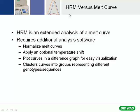HRM is an extended analysis of the melt curve — it takes it one step further. It requires additional analysis software that allows the normalization of the melt curves, applies an optional temperature shift as required, and plots the curves in a difference graph for easy visualization. You can then quickly pick up differences between the amplicons across populations.